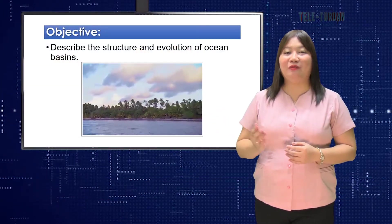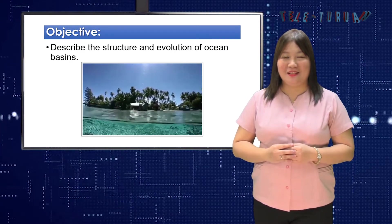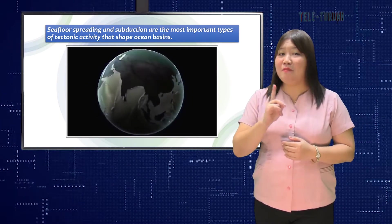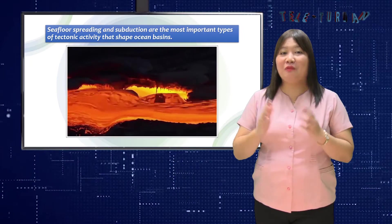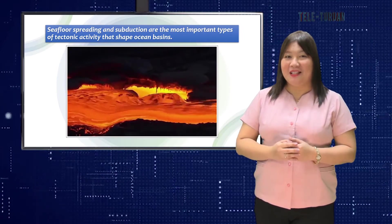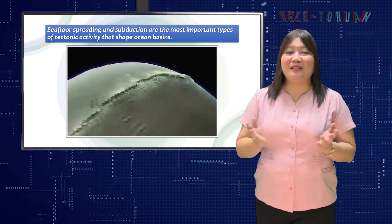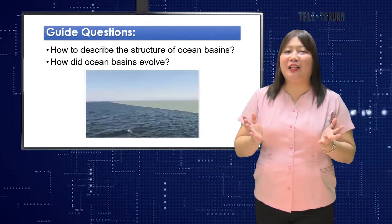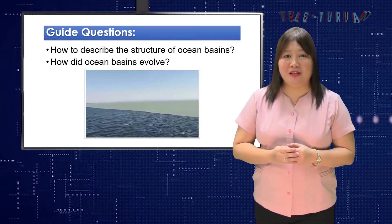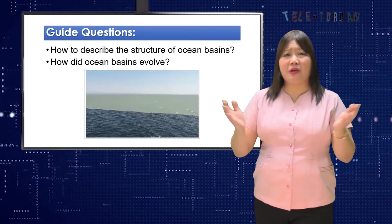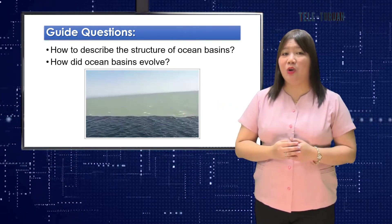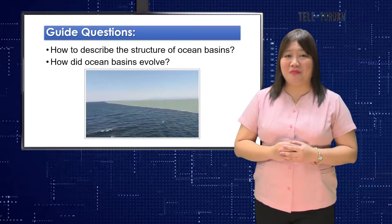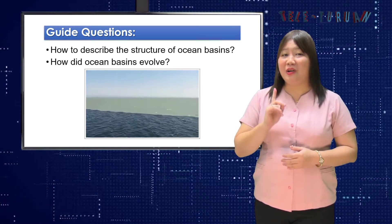Describe the structure and evolution of ocean basins. If you recall our previous topic, you have learned that seafloor spreading and subduction are the most important types of tectonic activities that shape the Earth and also the ocean basins. The Atlantic Basin, for instance, is expanding because of seafloor spreading. Knowing that tectonic activity constantly changes ocean basins, questions such as how to describe the structure of ocean basins and how did ocean basins evolve are important points to ponder. Let us first find out what are ocean basins.